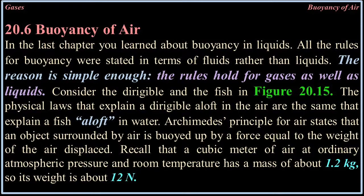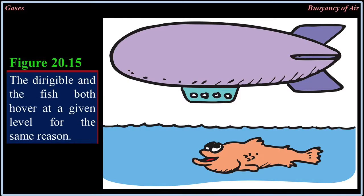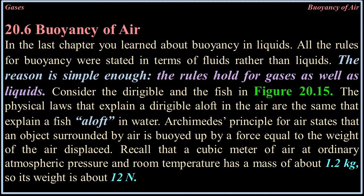20.6 Buoyancy of Air. In the last chapter you learned about buoyancy and liquids — all of the rules for buoyancy were stated in terms of fluids, because the rules hold for gases as well as liquids. Consider the dirigible and the fish in figure 20.15. The physical laws that explain a dirigible aloft in the air are the same that explain a fish afloat in water. Archimedes' principle for air states that an object surrounded by air is buoyed up by a force equal to the weight of the air displaced. Recall that a cubic meter of air at ordinary atmospheric pressure at room temperature has a mass of about 1.2 kilograms, so its weight is about 12 newtons.